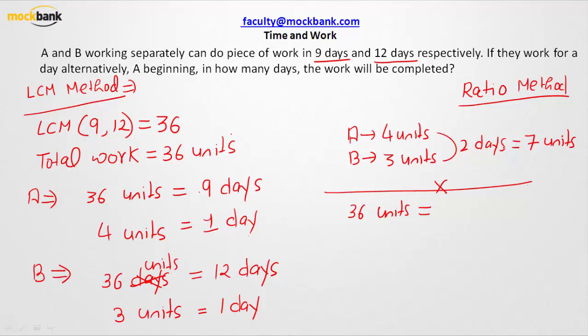If in 2 days 7 units of work get completed, and I multiply both sides by 5, I may say that in 10 days, 35 units of work will get completed.